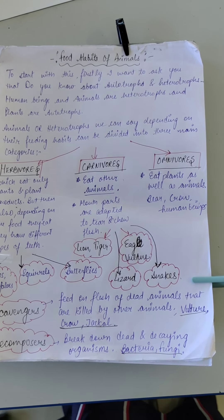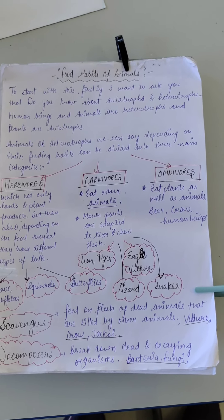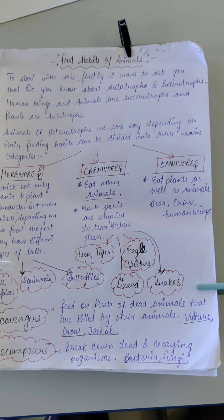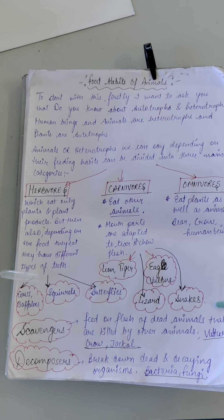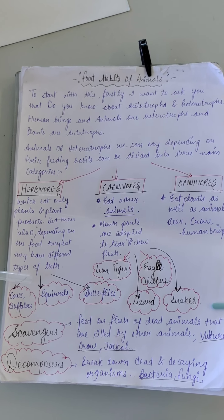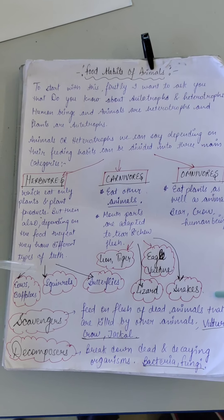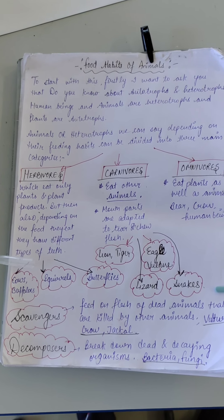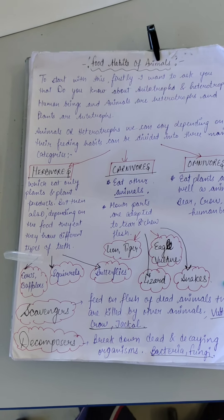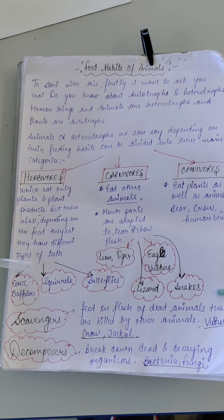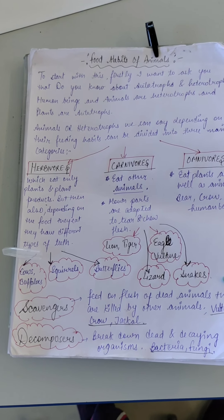Think for a minute — what are we? Can we make our own food? Not in the kitchen — can we make an apple? Can we make a cabbage? No, we can't. So we are heterotrophs. Who can make their own food? Plants. So plants are autotrophs, and we and all the animals are heterotrophs.